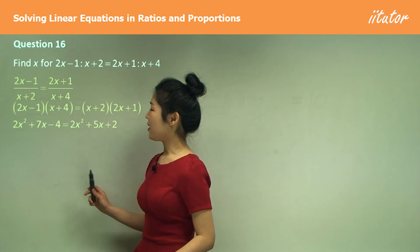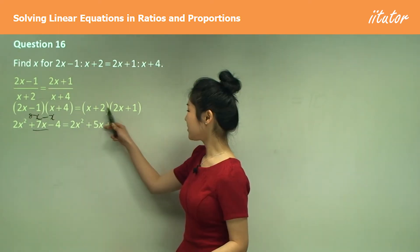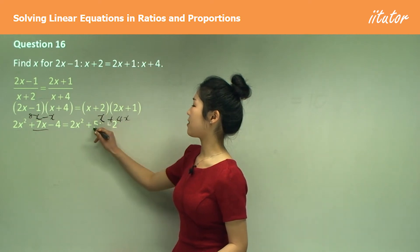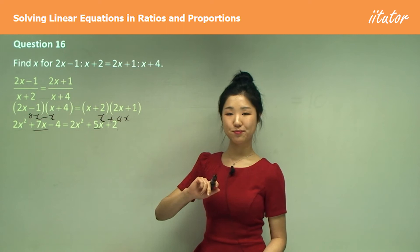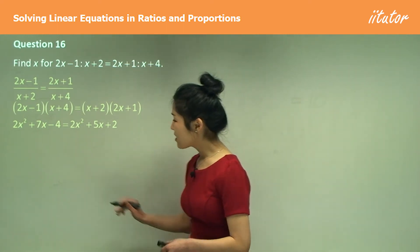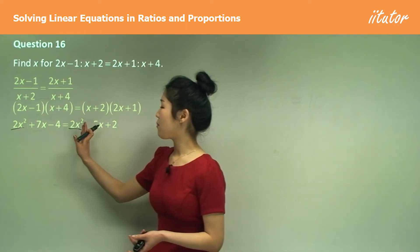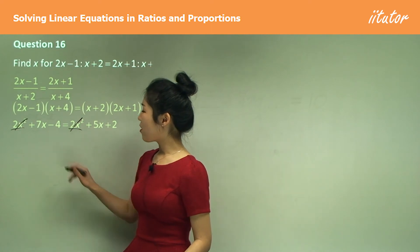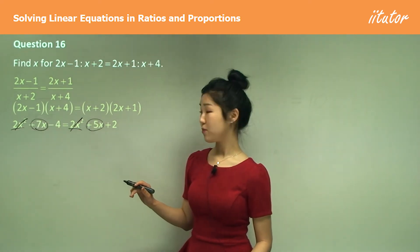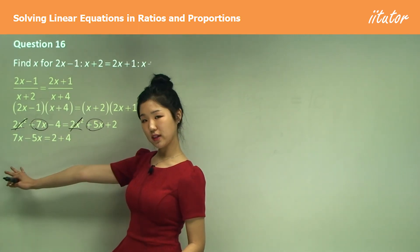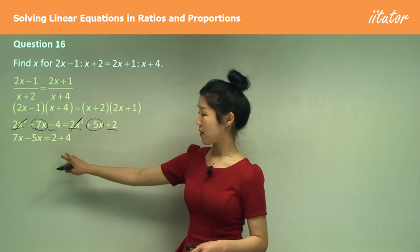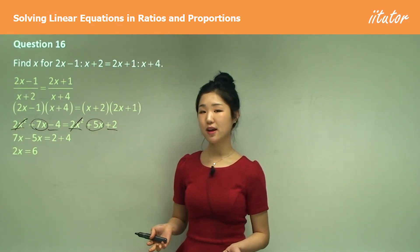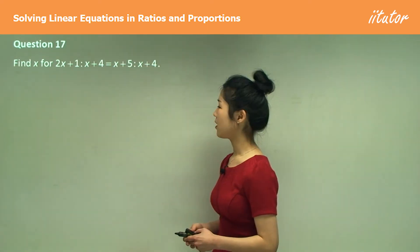Expand everything: (2x − 1)(x + 4) gives 2x² + 7x − 4, and (x + 2)(2x + 1) gives 2x² + 5x + 2. The 2x² terms cancel out. Gather the x's: 7x minus 5x is 2x. Move the constants: negative 4 becomes plus 4 on the right, so 2 plus 4 is 6. Divide both sides by 2: x = 3.